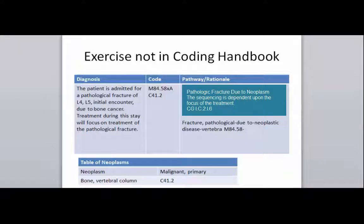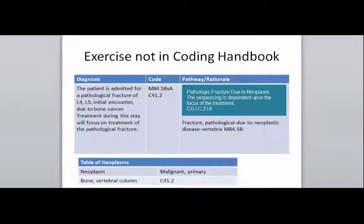Here's another exercise not in the coding handbook that is very common in hospitals: a patient is admitted for a pathological fracture of L4-5, initial encounter, due to bone cancer. Treatment during this stay will focus on treatment of the pathological fracture. That documentation is important because our coding guidelines tell us sequencing is dependent on the focus of treatment when you have a pathological fracture due to a neoplasm. The pathway: pathological fracture is your main term, with subterms due to neoplastic disease, vertebrae — taking you to M84.58. In the tabular, a seventh character is needed; initial encounter is our seventh character. We need a placeholder X in the sixth character position. The pathological fracture is the principal because the focus of treatment during this encounter is that fracture, and the cancer is secondary because that's the reason he has the fracture.